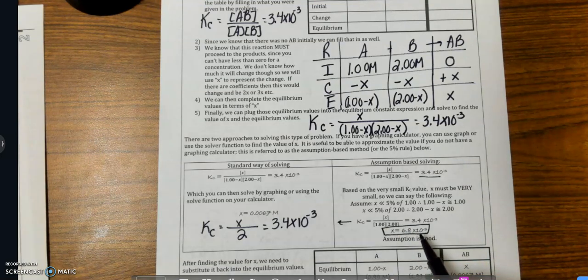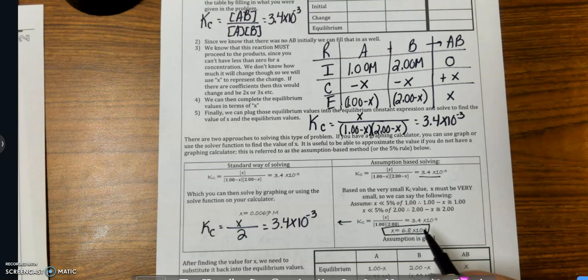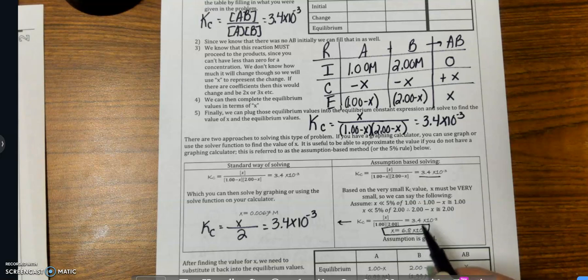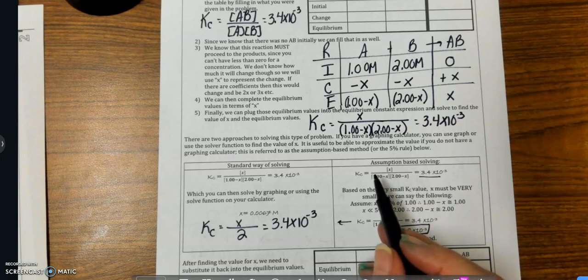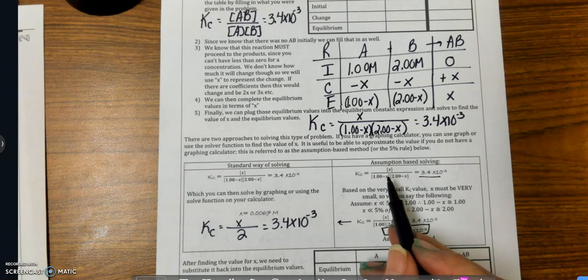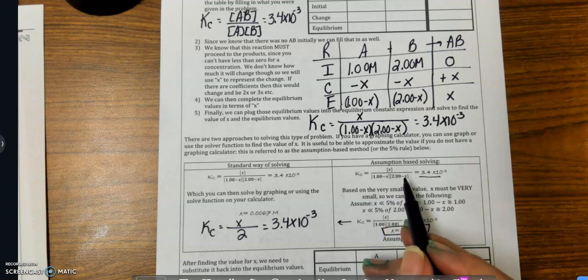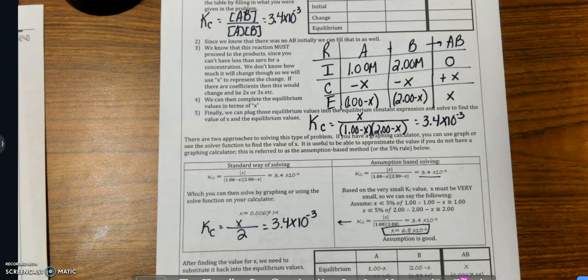Now, what you can do here is you can test this using what's called the 5% rule. You can say, once I find my answer, is this less than 5% of 1? Or is this less than 5% of 2? Because that's what we assumed up here, that it was really small. And this value, in order for this assumption to hold, has to be 5% or less than that. And this value has to be 5% or less than that. And it is, so the assumption is good.